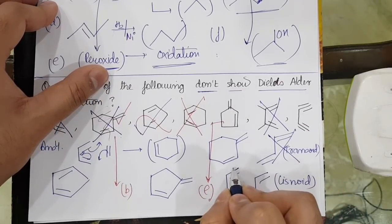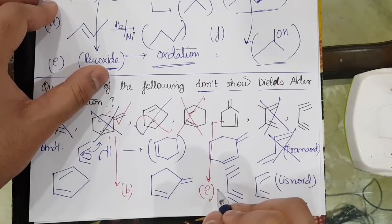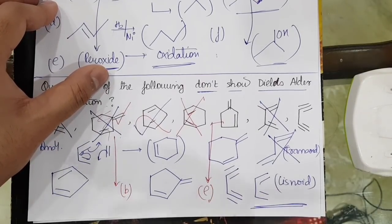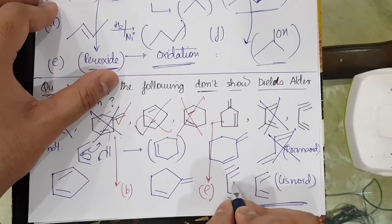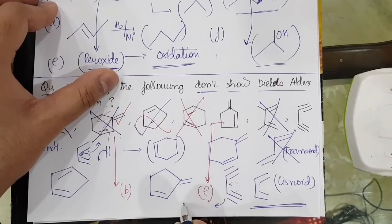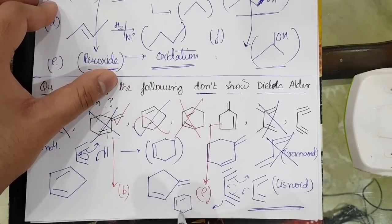Triple bond will not give the Diels-Alder reaction because of the electronegativity reasons and moreover the ring that will be unstable in nature. So since that is unstable due to strain, roughly we will get the formation of something like this, double bond, double bond, which is very unstable in nature.